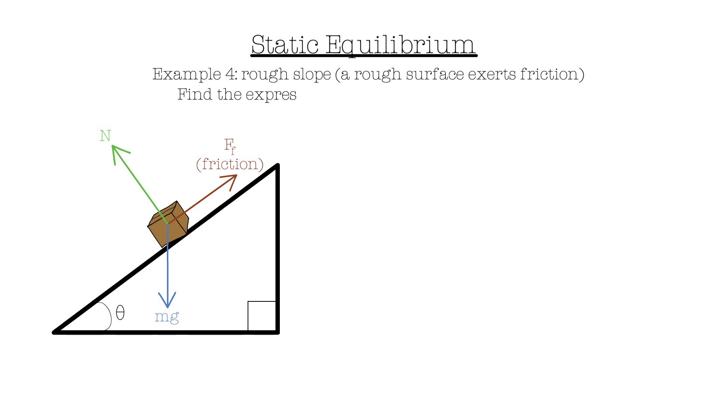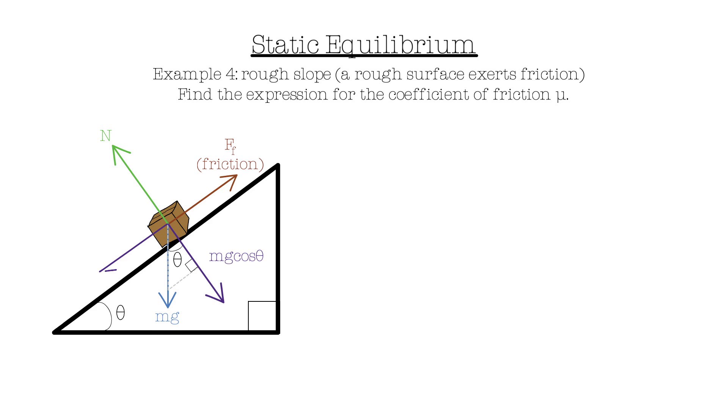Okay, we want to find the expression for the coefficient of friction denoted by the Greek letter mu. Just like example 3, we need to resolve the weight of the box into its horizontal and vertical components to the slope. The vertical component comes to mg cos theta and the horizontal mg sin theta.